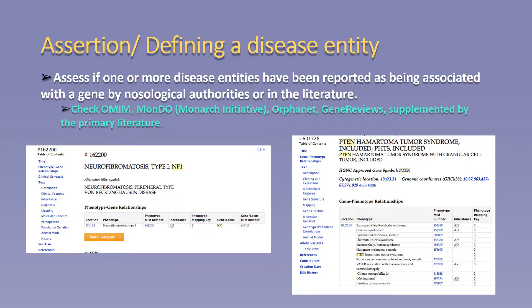Therefore, we would encourage the curation of NF1 for neurofibromatosis type 1, as opposed to the curation of NF1 for a phenotypic feature associated with the full syndrome, such as Lisch nodules. For the example on the right, we see that the gene PTEN is associated with 12 disease entities, indicating that review of the remaining criteria and literature may be needed to determine if these entities represent separate, unrelated diseases, or rather that some or all may be lumped into a broader, more inclusive disease entity to represent the spectrum of disease for variation in PTEN.